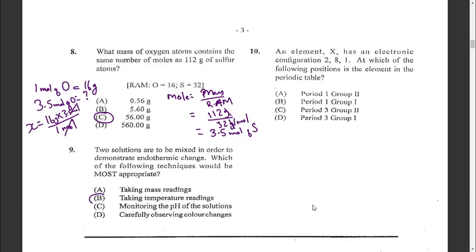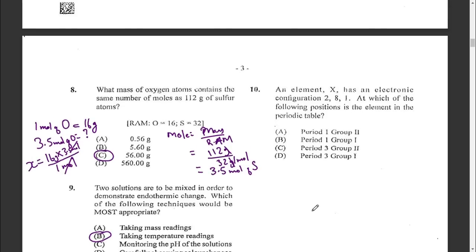Question ten: an element X has an electronic configuration of 2, 8, 1. At which position is the element in the periodic table? 2, 8, 1 indicates group one, and there are three numbers in the electronic configuration indicating period three. The valence electrons indicate the group and the total numbers indicate the period, so it is period three, group one — that's D, which is sodium.